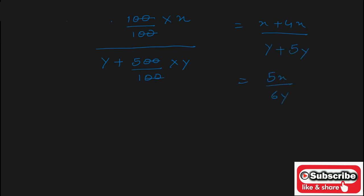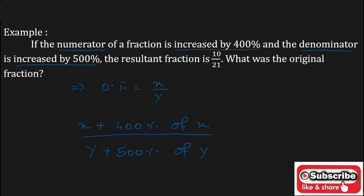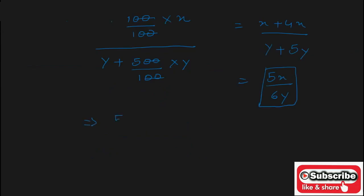This is the resultant fraction when the numerator is increased by 400 percent and the denominator is increased by 500 percent. So 5x upon 6y is equal to 10 upon 21.